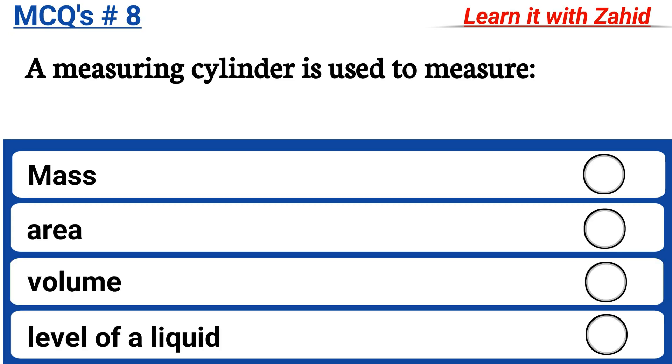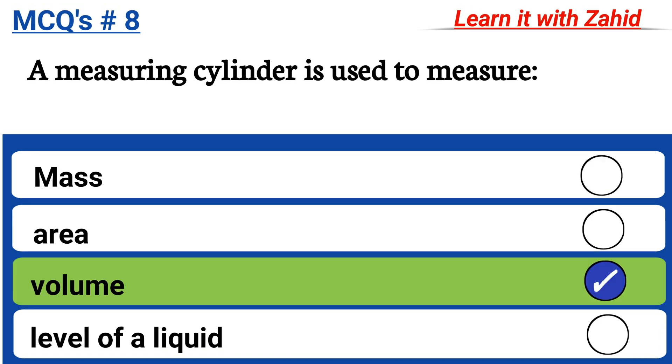A measuring cylinder is used to measure mass, area, volume, level of a liquid. And the correct answer is volume.